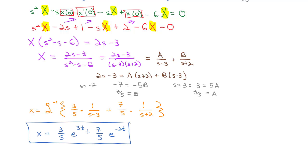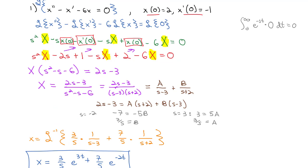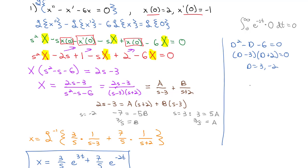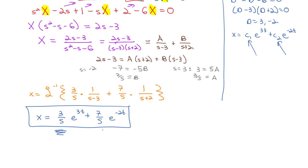Notice that if we had solved this using methods from chapter 2, we would have found the characteristic equation d squared minus d minus 6 equals 0, factoring as d minus 3 times d plus 2, giving d equals 3 and negative 2, so x equals c1 e to the 3t plus c2 e to the negative 2t. We'd then have to go back and solve for c1 and c2 using the initial conditions. What's remarkable about the Laplace transform method is it solves for those constants as we work through the problem — we don't have to go back.